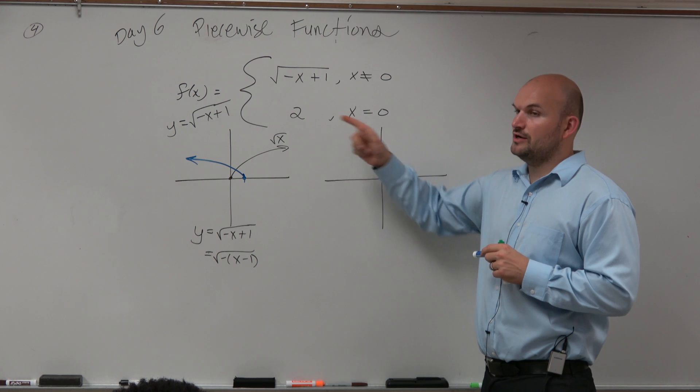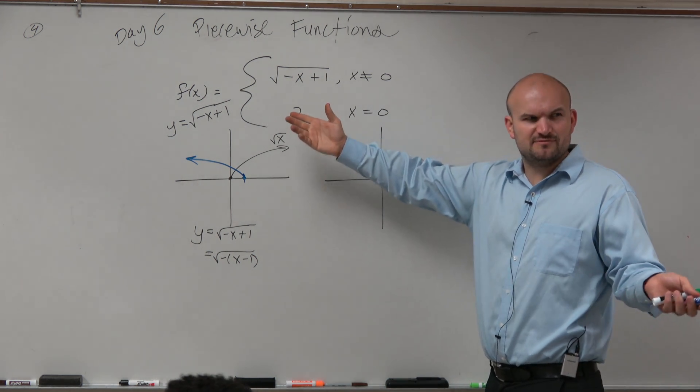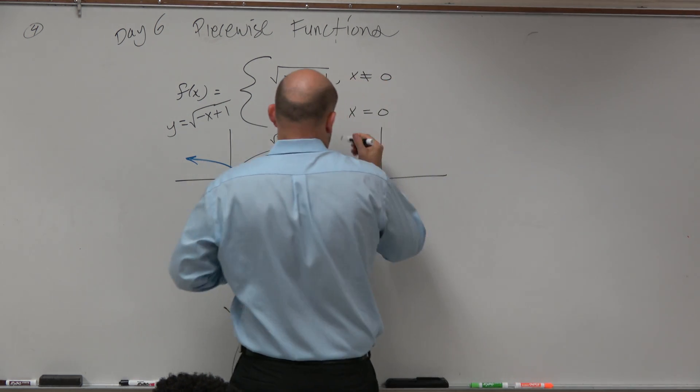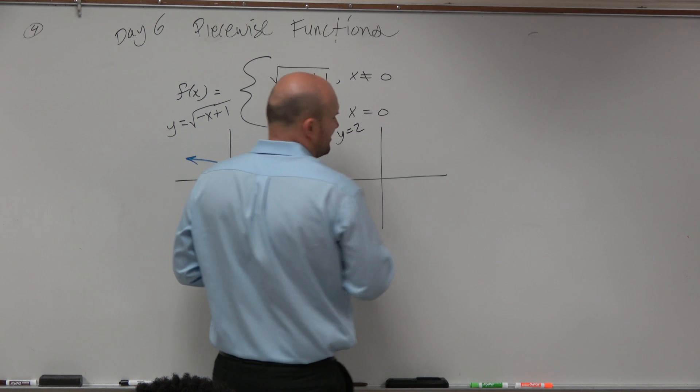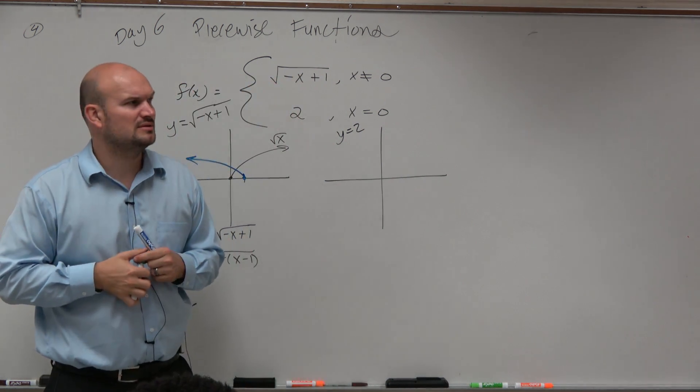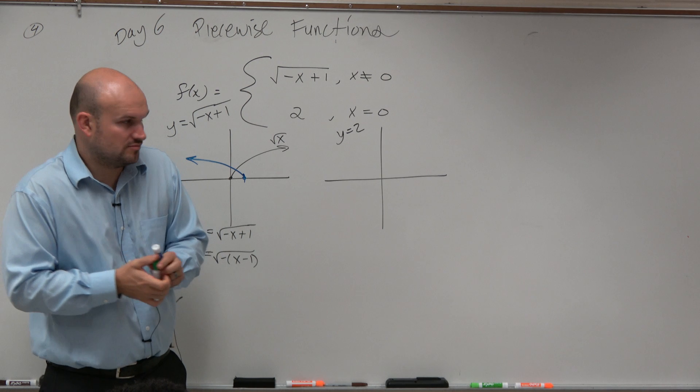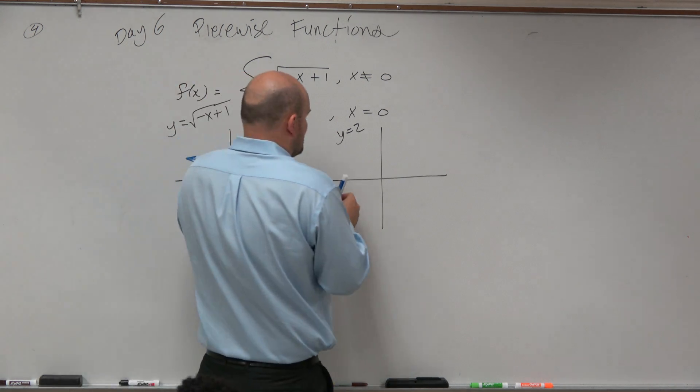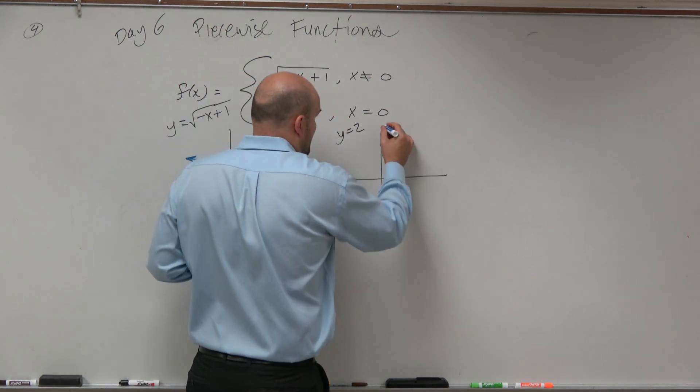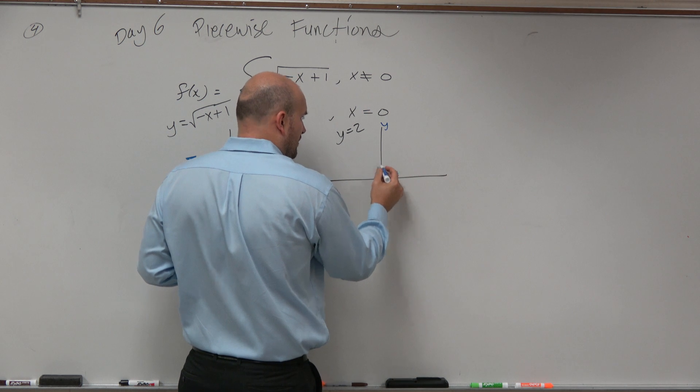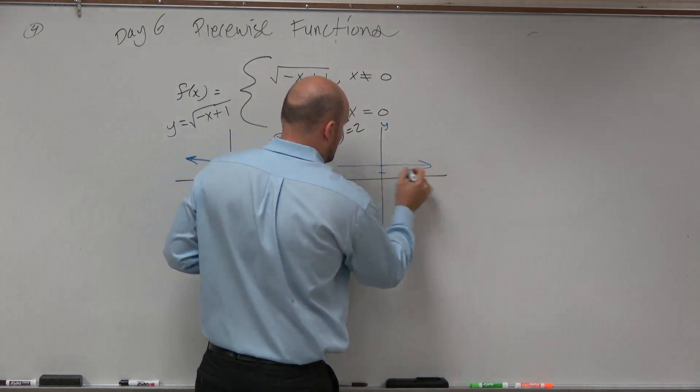Over here, you have the number 2. How do you graph this? Remember, this is like an equation, y equals 2. How do you graph y equals 2? Horizontal line, right? Just go to where y equals. You know, here's y. y equals 1, y equals 2. Nice little line.